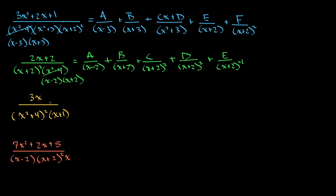Now let's move on to the one in yellow. It doesn't look like the numerator or denominator can factor at all. We have a linear factor in this denominator, so we can write A over (x plus 1). And then this might look a little new — we have an irreducible quadratic factor raised to a power, so we have repeating irreducible quadratic factors. This combines two ideas: repeating linear factors and irreducible quadratic factors. Maybe pause the video and try to wrestle with this.